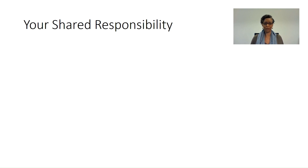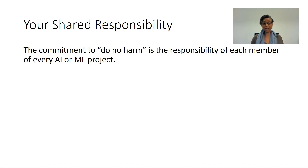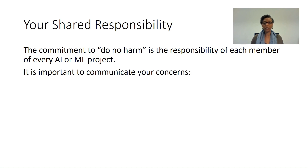But what does that actually mean? It means that the commitment to do no harm is the responsibility of each and every member of every AI or machine learning project — from the project manager to the debugger to the end-user quality tester and everyone in between. In fact, one of the most important things we can do is to communicate our concerns about the possibility of bias and discrimination.